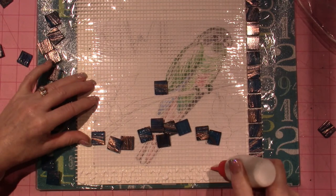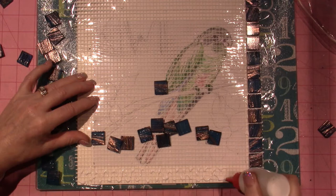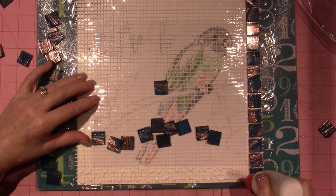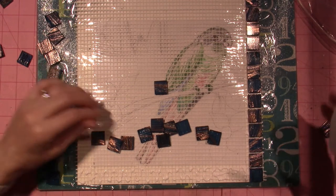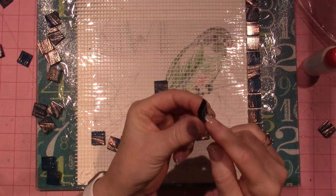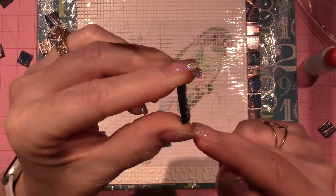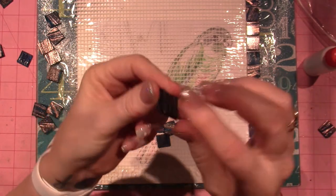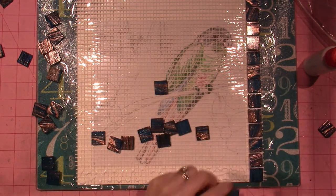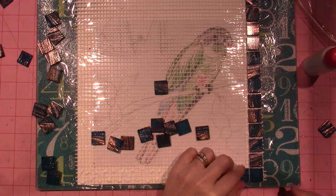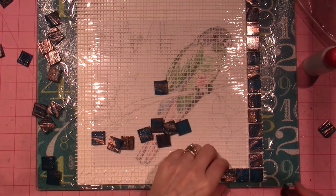These tiles also have like a ridge on the back. I'll show you. They have this, so to cut them is annoying. It goes in, out, in, out, but it grips the adhesive better that way.